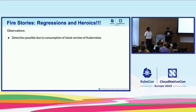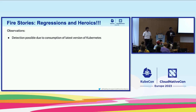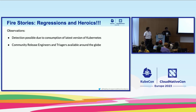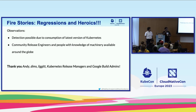We released a new version of Kubernetes in 23 hours and a few minutes. On the 13th evening India time we found the issue; by the 14th evening India time we had a new Kubernetes release for consumers — a turnaround time of one day. Detection was possible because we had consumers who consumed Kubernetes as soon as it was available. Community release managers and triagers were available around the globe, with people taking over parts of the process wherever the sun followed. Thanks to Andy, Dims, Jordan, the Kubernetes release managers, and Google build admins.